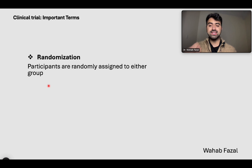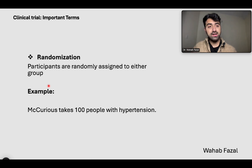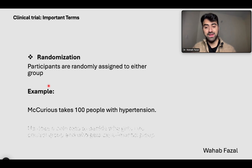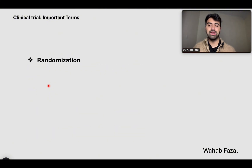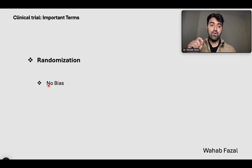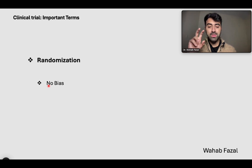Let's take an example to understand this. Mercurius takes 100 people with hypertension and is trying to make a new drug better at treating hypertension than amlodipine. He does a coin toss to decide who gets into the control group and who gets into the experimental group. This ensures there is no selection bias — meaning Mercurius's own free will does not influence the decision about who receives the medication.